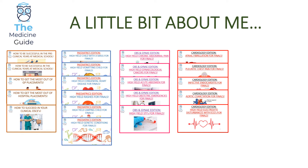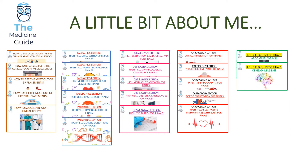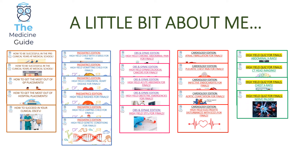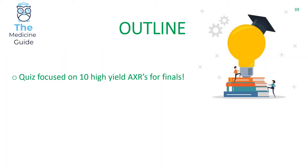This video, among many others, forms part of my high yield quiz edition for finals. Today's video is looking at abdominal x-rays. I've also got videos on CT head imaging, high yield chest x-rays, high yield nerve palsies, and high yield rheumatological and orthopaedic imaging. So without further ado, let's get started. I'm going to go through ten high yield abdominal x-rays for finals. I'll give you ten seconds to formulate your diagnosis — you can either pause the video or wait for the answer. So have a pen and paper at the ready and let's begin.